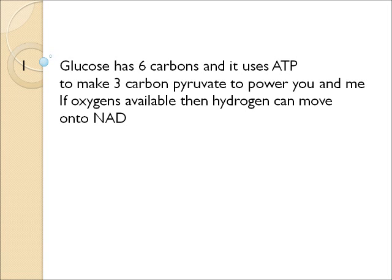Glucose has six carbons and it uses ATP to make three carbon pyruvate to power you and me. If oxygen's available then hydrogen can move onto NAD.